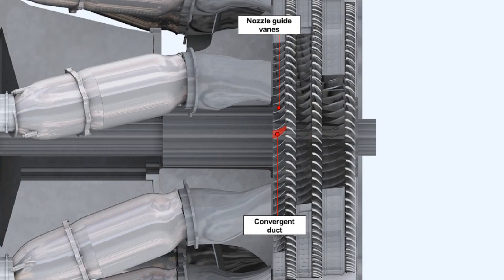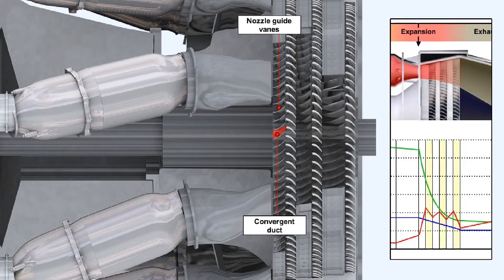Nozzle guide vanes are of aerofoil shape. The space between two nozzle guide vanes forms a convergent duct. Within this convergent duct, some of the potential or pressure energy in the gas stream is converted to kinetic or velocity energy.